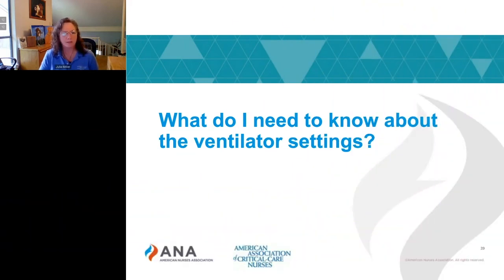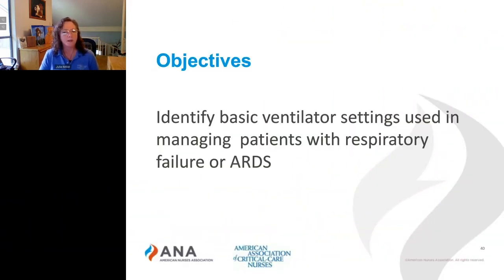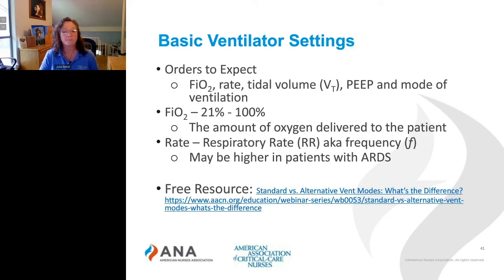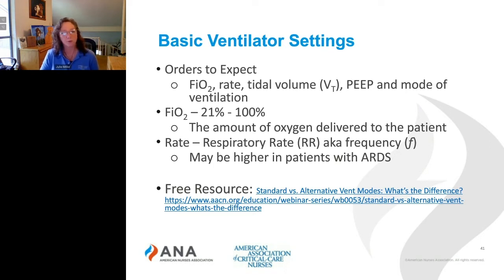What do I need to know about ventilator settings? I'm going to help you identify what the basic ventilator settings are and what your orders might sound like for patients who have respiratory failure or ARDS. You might get a patient in report and the orders might sound something like this: FiO2 of 60%, rate of 22, tidal volume 380, PEEP of 18, and they're on assist control ventilation — that's the mode. I'm going to break each one of those down to help you understand what they are.